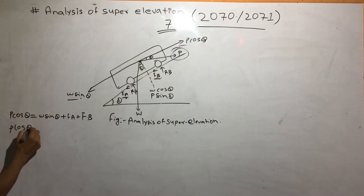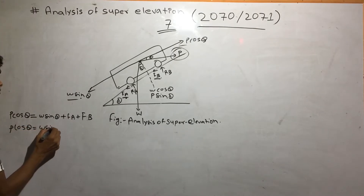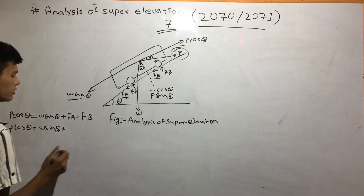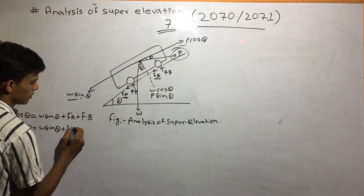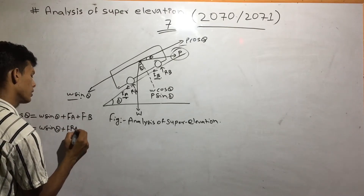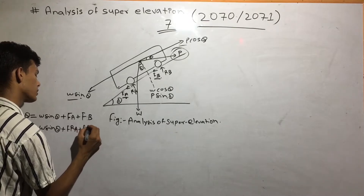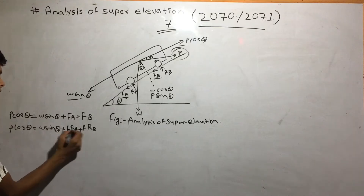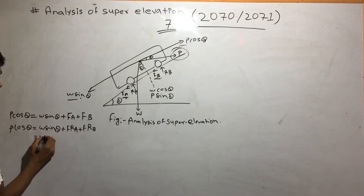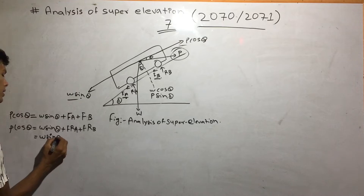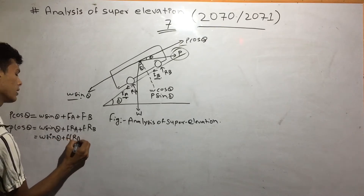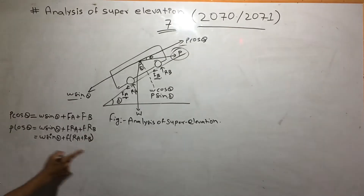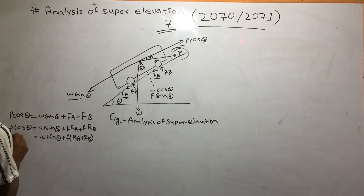P cos θ is equal to W sin θ. Frictional force is equal to FA. The first factor is equal to FA, so the result is equal to FA. We can see FAA and FCB. So its first factor is equal to FA, and F is equal to FA. The first factor is FA plus FB. Even FA, if I have the value of FB.